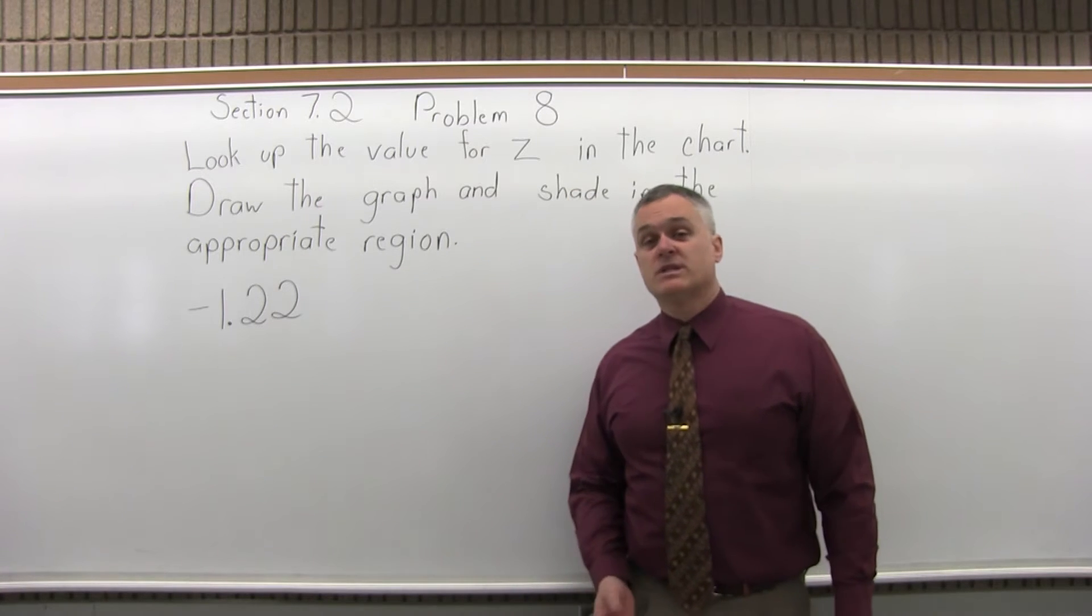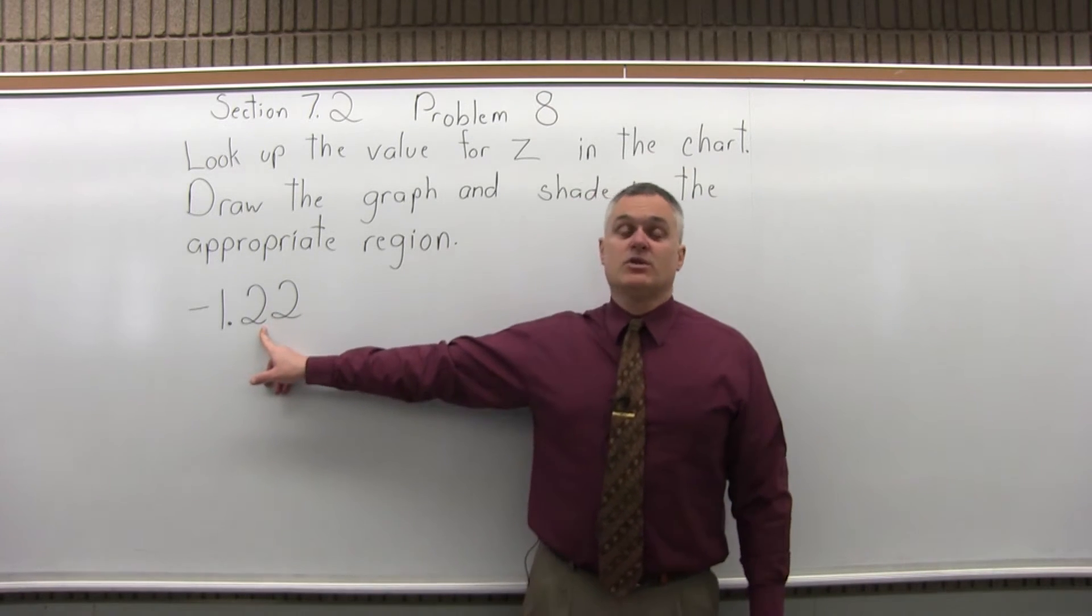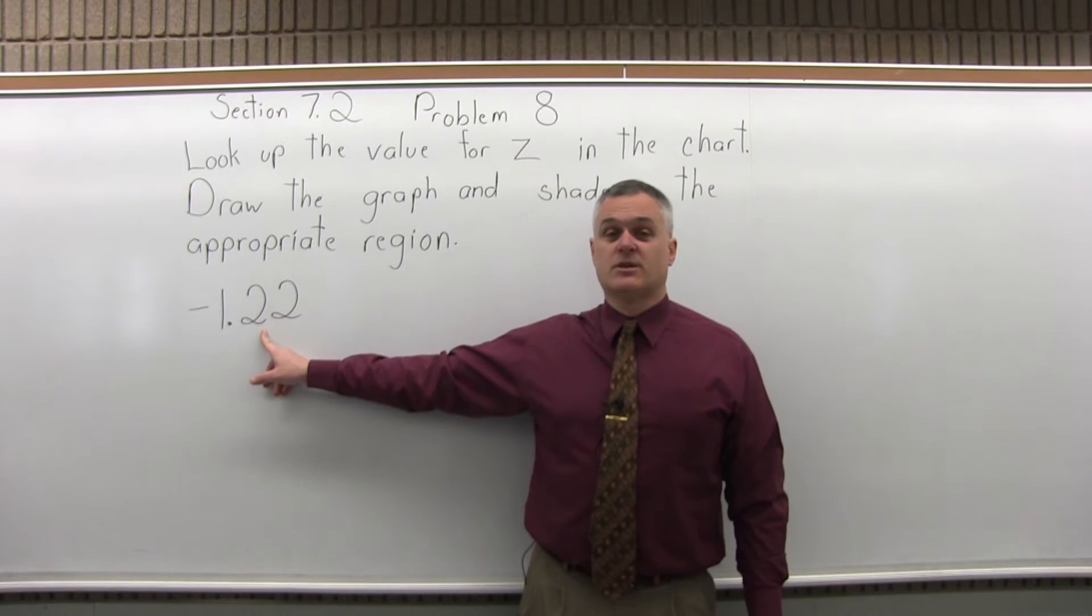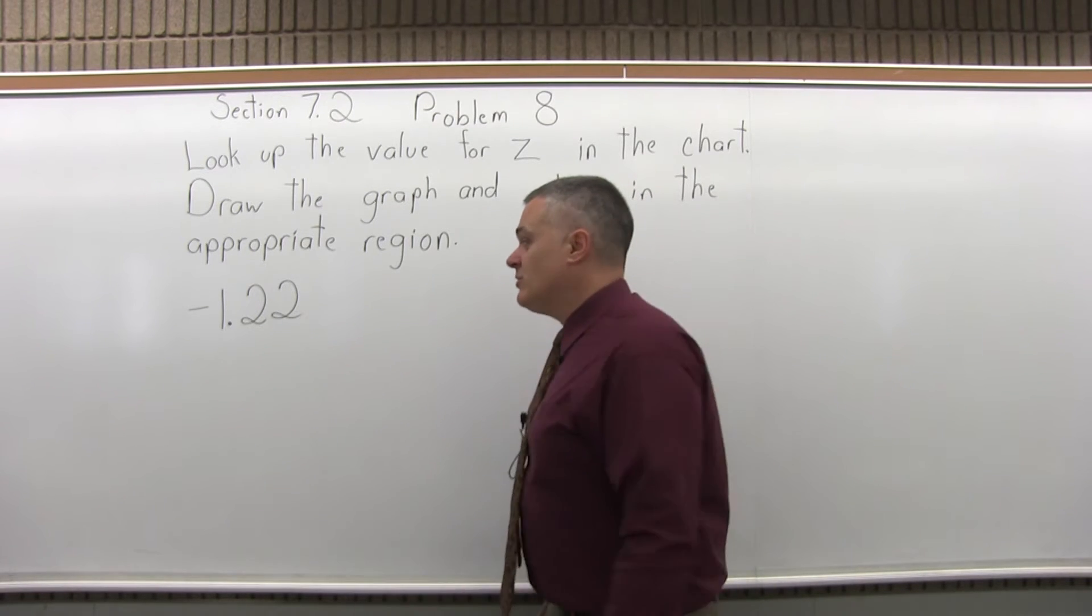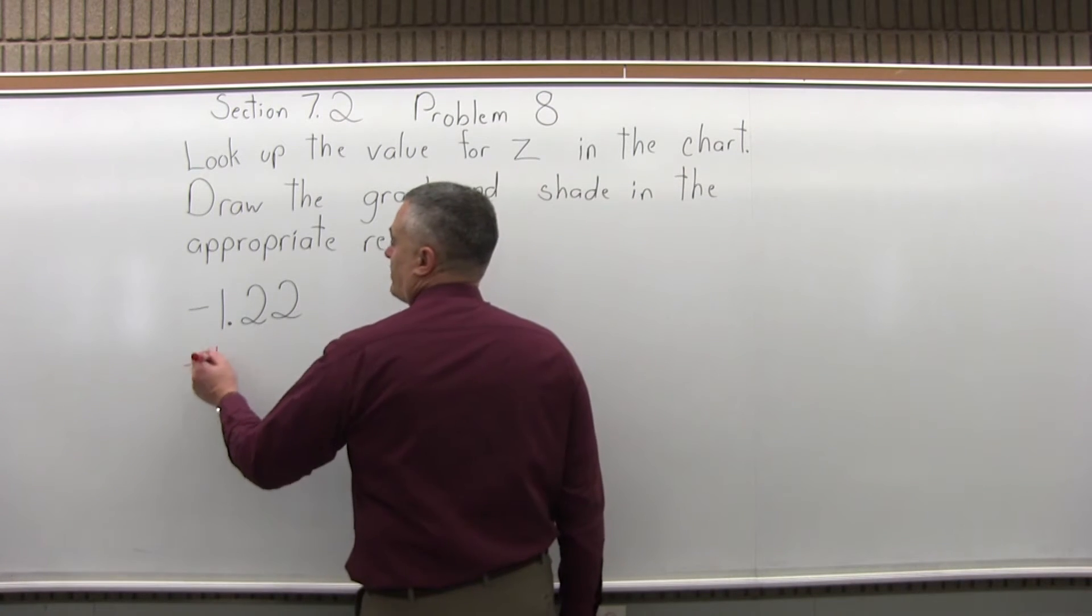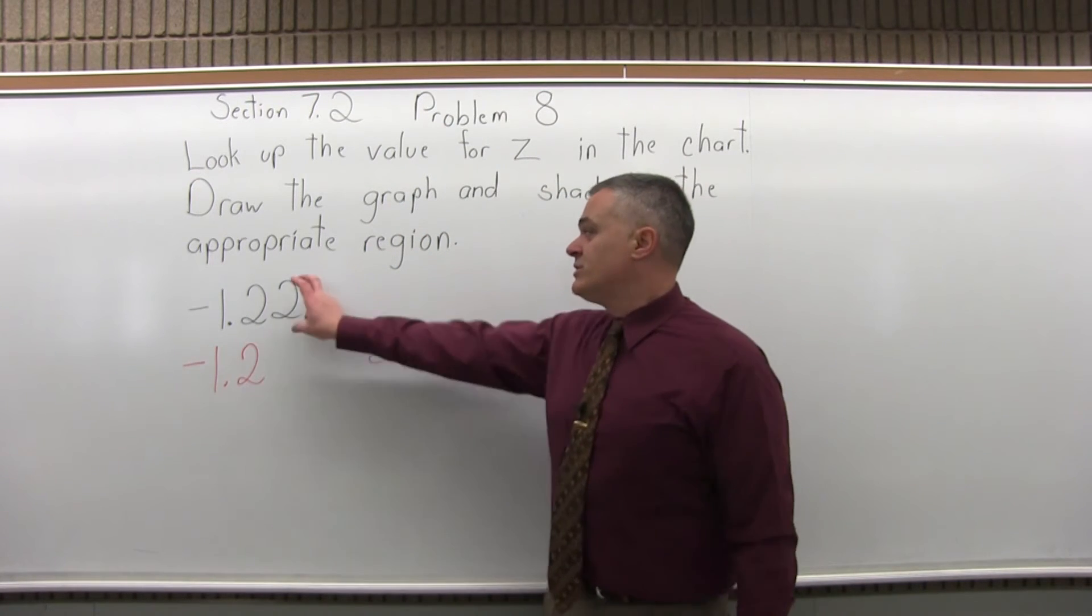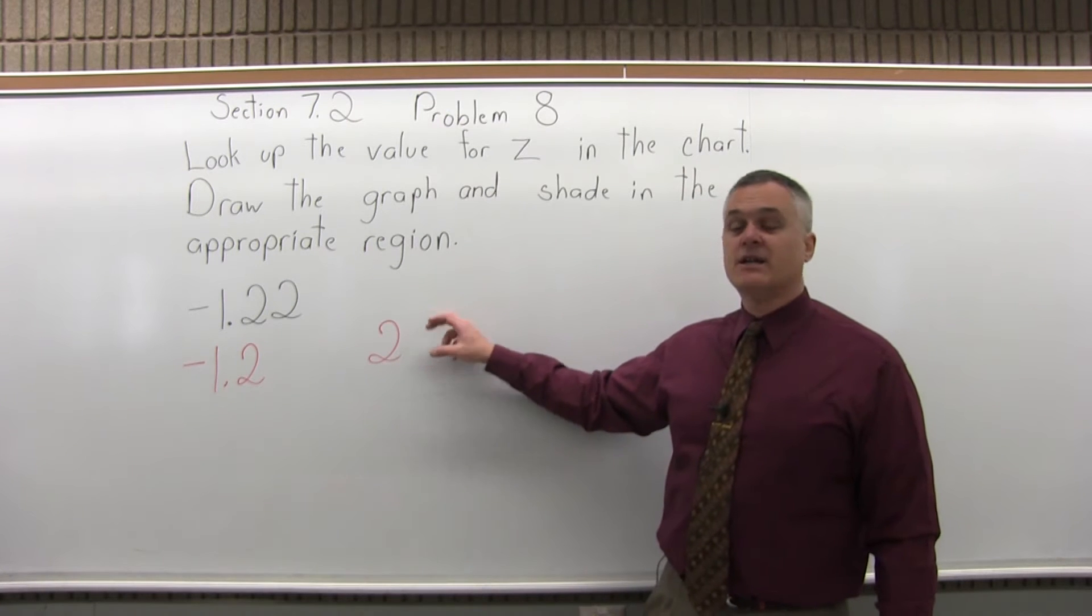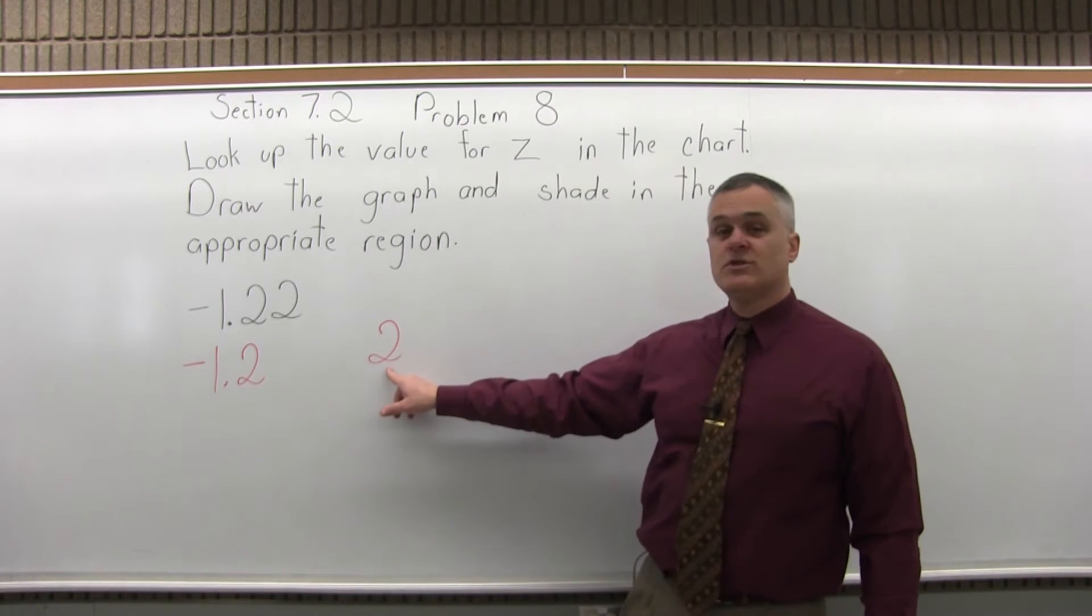So there's a four step process to look up any value in the chart. Step 1, write the number to look up so that it has two places after the decimal. This one already has two places so we're all set with step 1. Step 2, split the number into two parts by pulling off the rightmost digit. So the rightmost 2, we'll just pull it off to the side and now our number is in two parts. We have negative 1.2 and then just 2.